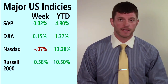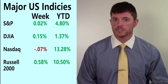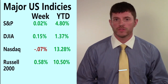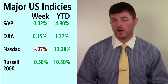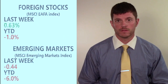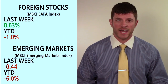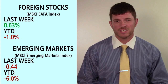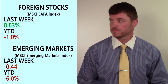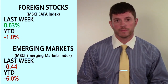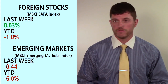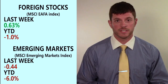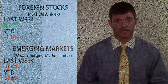The U.S. markets were relatively stagnant last week, with the Russell 2000 leading the way up about half a percent. All the U.S. indices that we track are still positive year-to-date. Foreign and emerging markets had a mixed bag, but also not a lot of activity there, with foreign stocks up about 0.6%. Both foreign and emerging market stocks are negative for the year, with foreign down around 1% and emerging markets still down around 6% for the year.